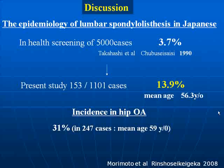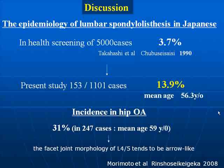As causes of degenerative spondylolisthesis, hormonal factors, systemic flaccidity, and genetic factors common to generalized OA have been proposed. Morimoto and others have speculated that the incidence may be high in hip OA patients since in them the facet joint morphology of L4-5 tends to be more coronally oriented.